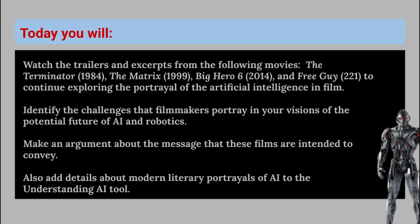Today, you will watch the trailers and excerpts from the following movies: The Terminator, The Matrix, Big Hero 6, and Free Guy, to continue exploring the portrayal of artificial intelligence in film. You will identify the challenges that filmmakers portray in the visions of the potential future of AI and robotics. You will make an argument about the message that these films are intended to convey, and you will add details about modern literary portrayals of AI to the Understanding AI tool.